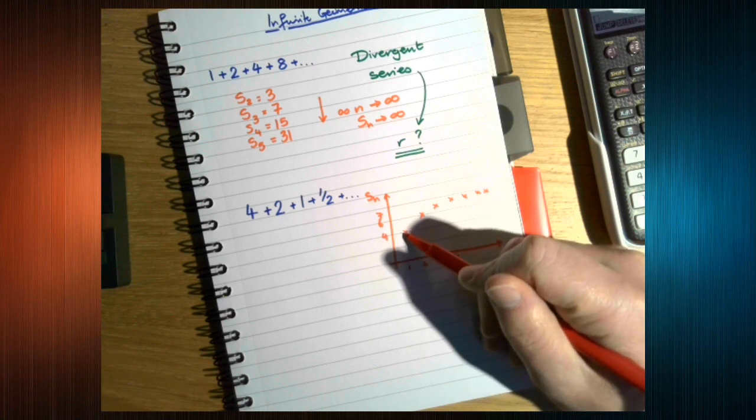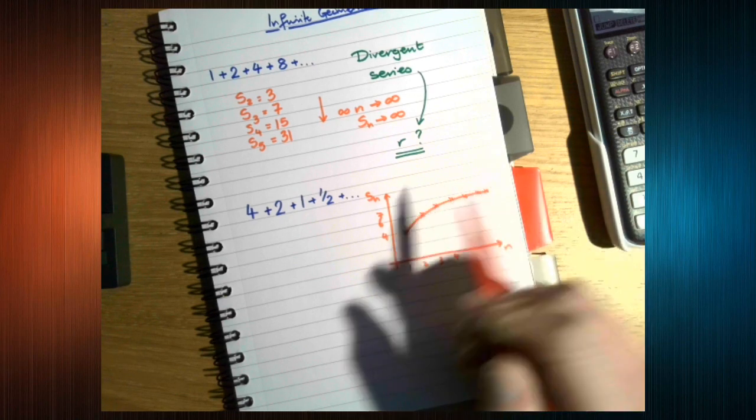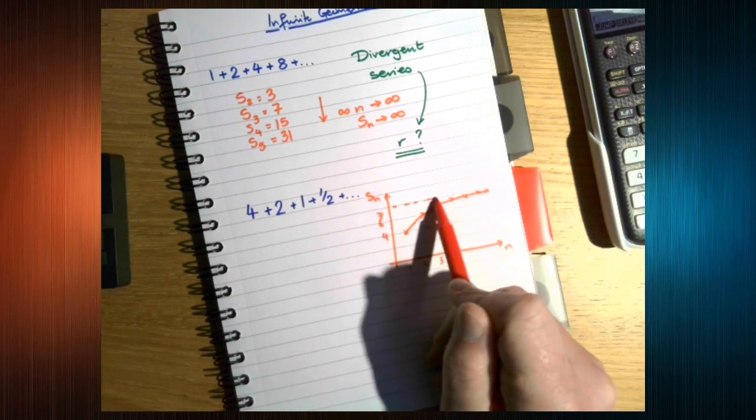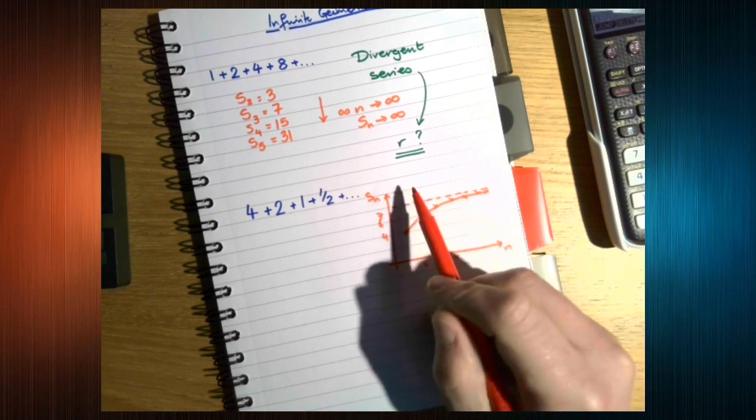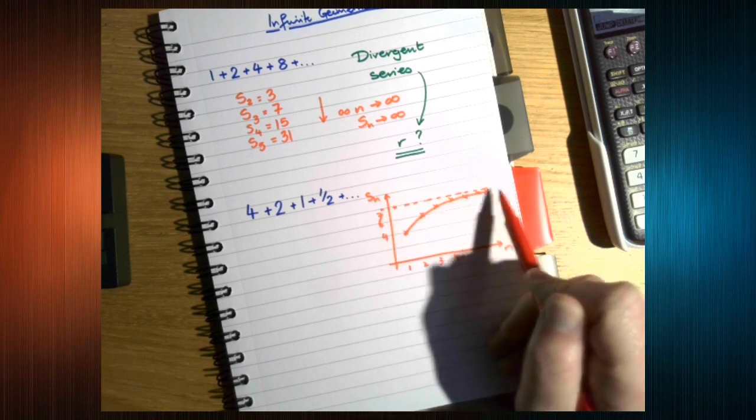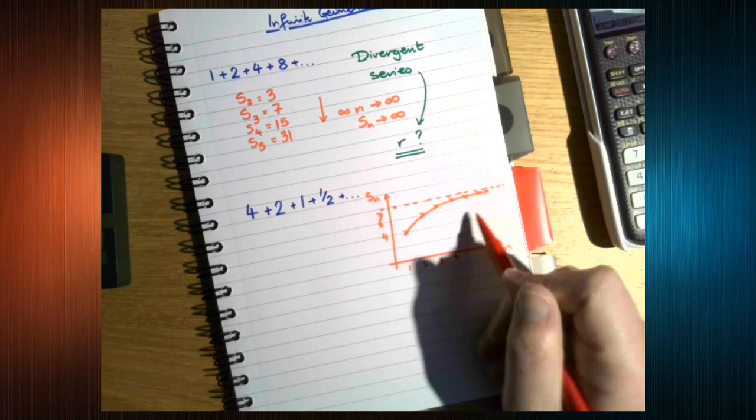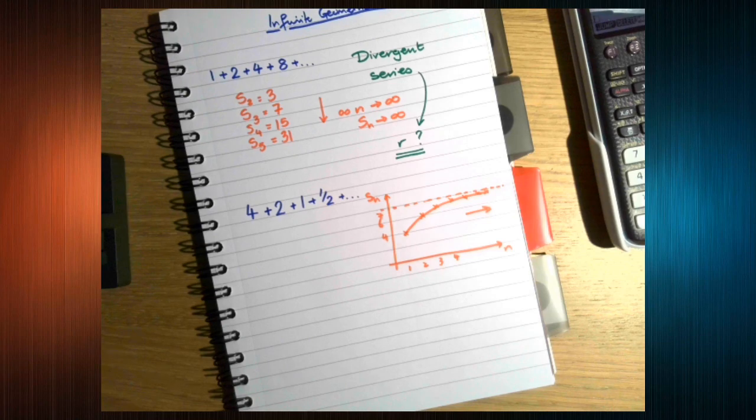If we were to draw this here, we can see that there's some value, looks like 8, might not be. There's some value that this is getting close to, as N gets big.